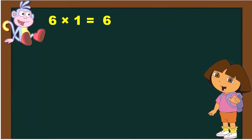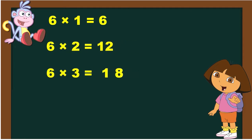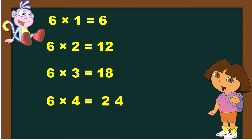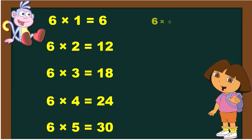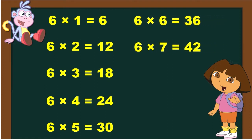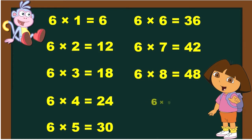6 1s are 6. 6 2s are 12. 6 3s are 18. 6 4s are 24. 6 5s are 30. 6 6s are 36. 6 7s are 42. 6 8s are 48. 6 9s are 54. 6 10s are 60.